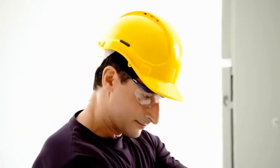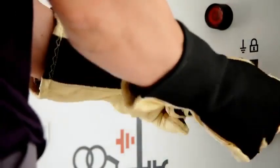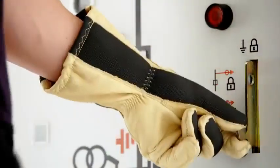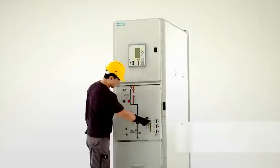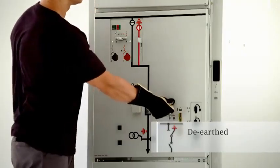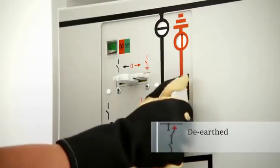To de-earth this feeder the padlock must first be removed rendering the locking device inoperative. The circuit breaker can then be switched to the open position and hence the feeder can be de-earthed.